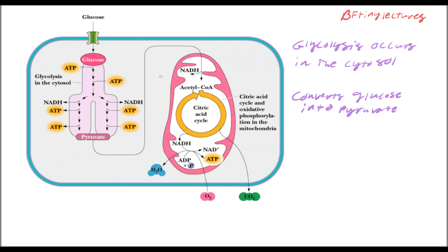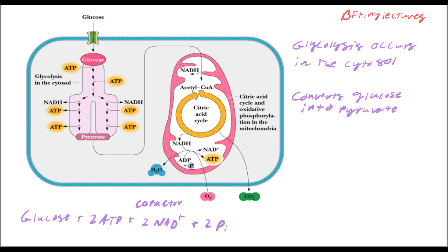What do we use in glycolysis? To do glycolysis you're going to need the following: a glucose molecule, 2 ATP, plus 2 NAD+ — which is an essential cofactor — and we're also going to need two phosphate groups, which will come from the ATP.